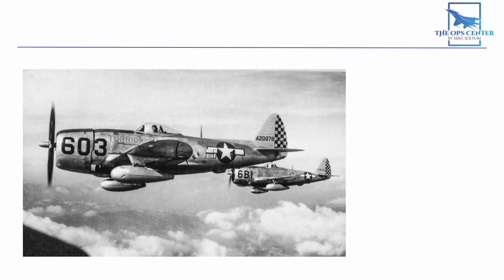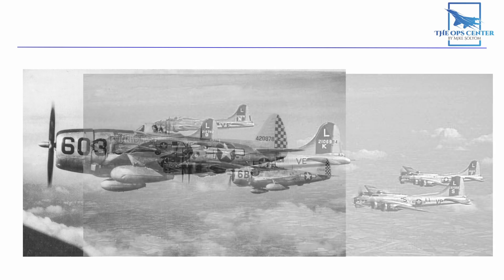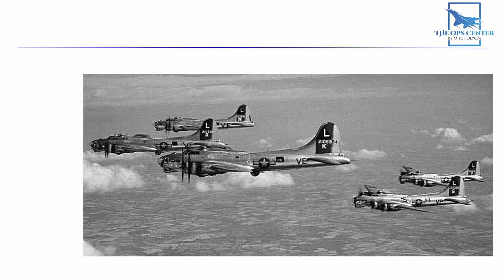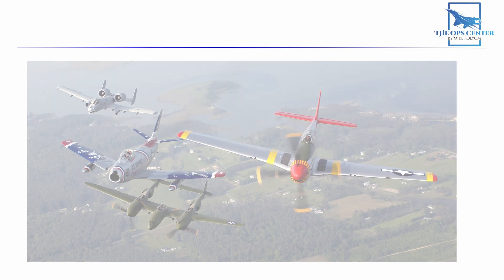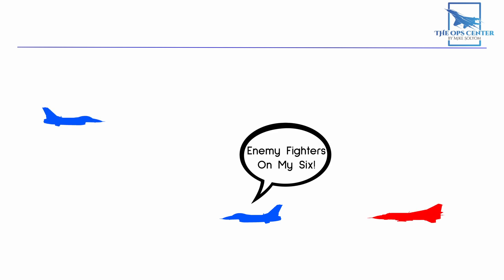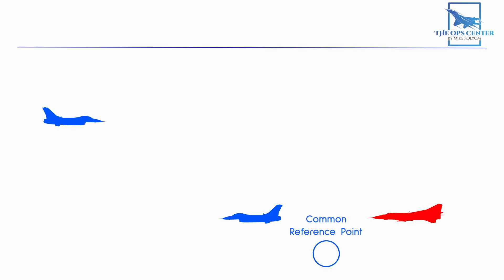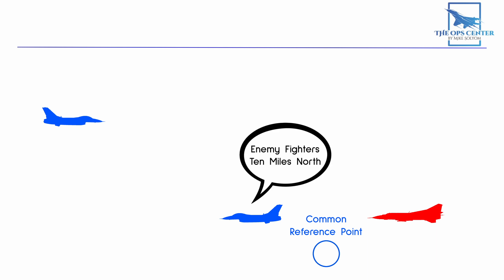As long as there have been air forces going to war in large numbers, there's been a need to get them coordinated. Getting help when you need it, or warning allies of a threat, are both things that need to happen fast. It wasn't long before air forces found that vague requests didn't help. Saying 'there are enemy fighters on me' doesn't help if no one knows where you're at. The simple solution was to agree on common reference points ahead of time. Then someone could say 'there are enemy fighters 10 miles north of the reference point,' and everyone who hears the message would know exactly where that is.